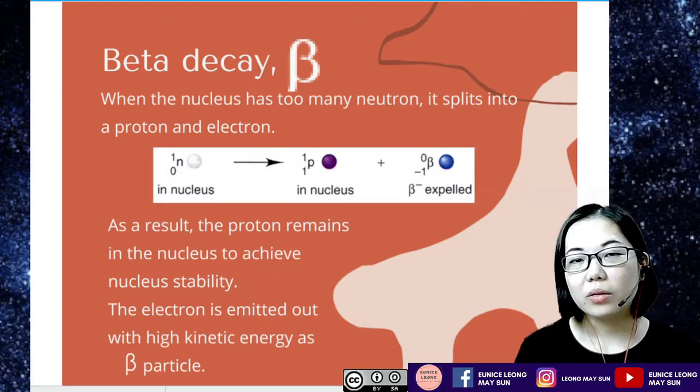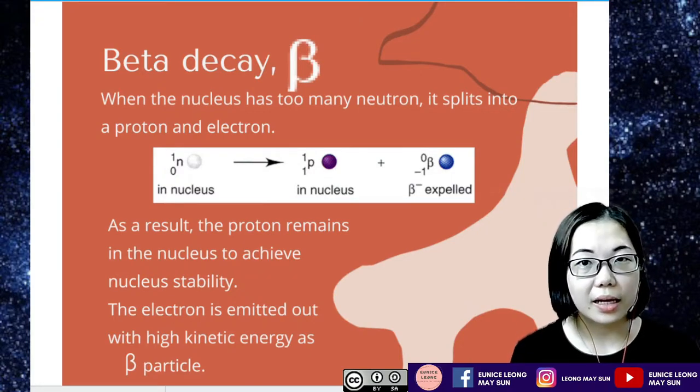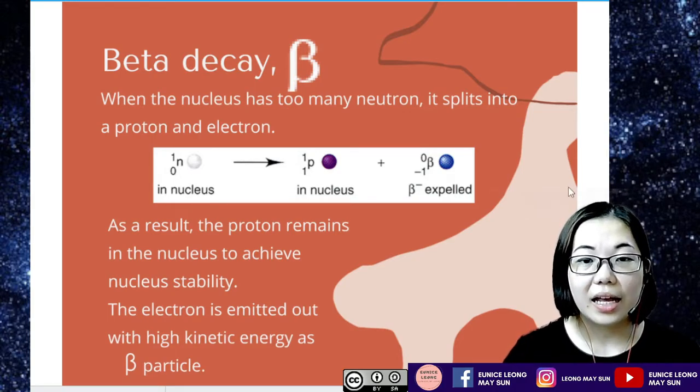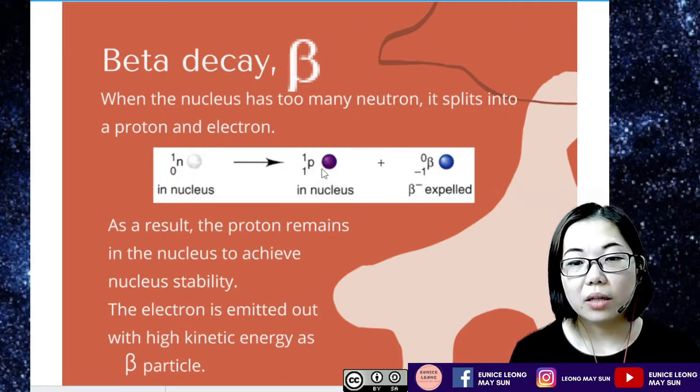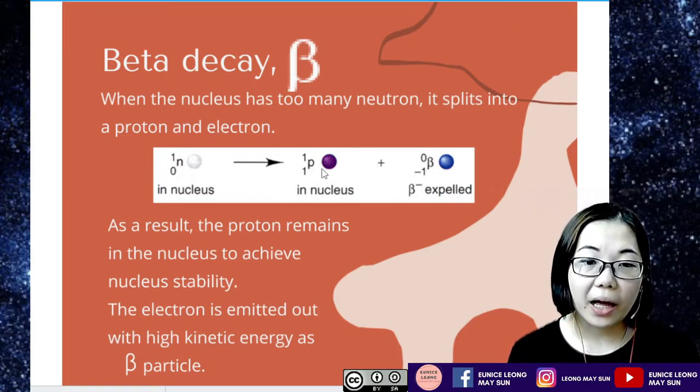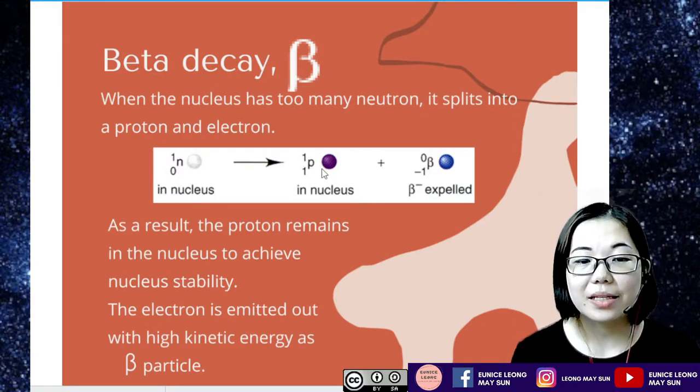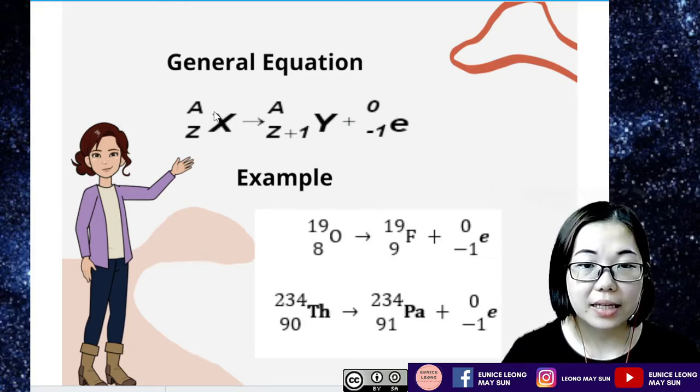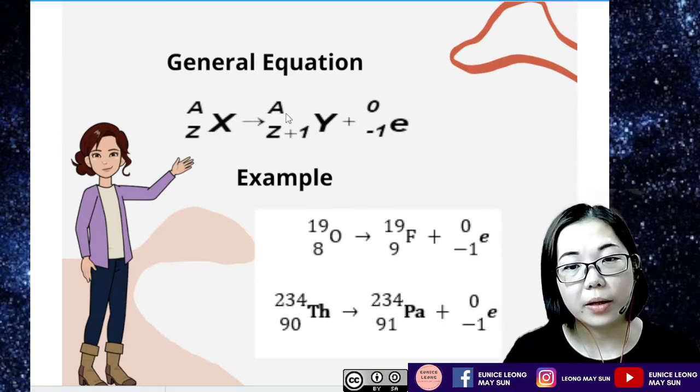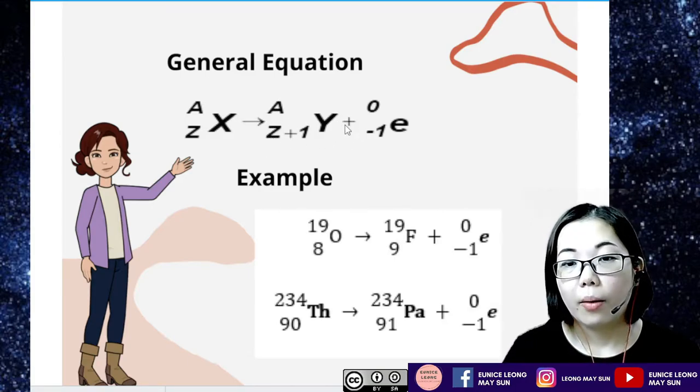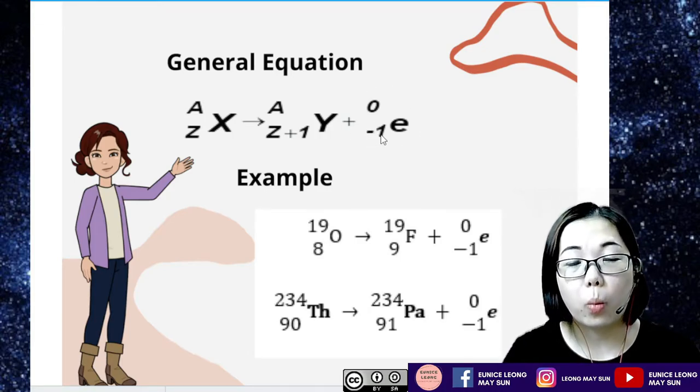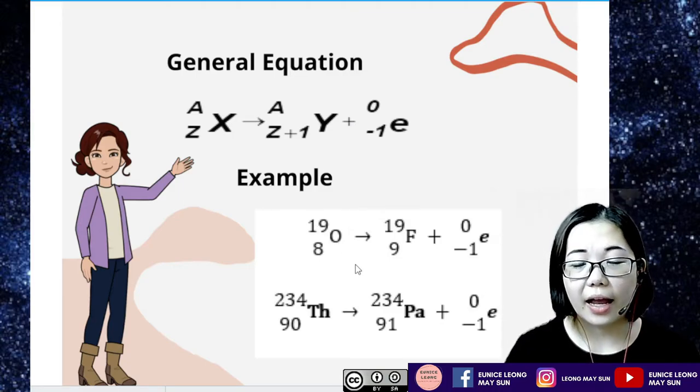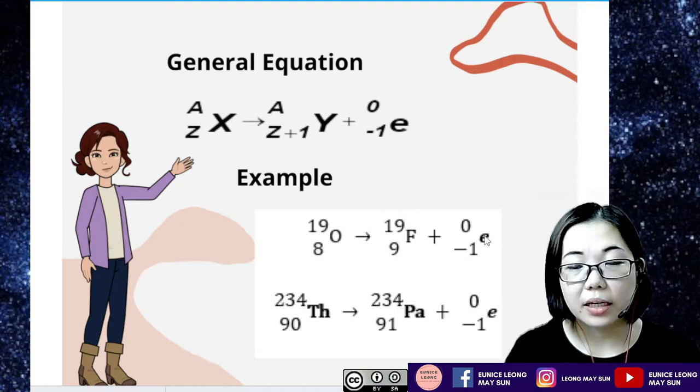Next is beta decay. Now when the nucleus has too many neutrons, a nucleus has proton and neutrons, so when there's too many neutrons, it becomes unstable. So the neutron will actually split into a proton and an electron as seen over here. So as a result, the proton will remain in the nucleus to achieve nucleus stability, but electrons being negatively charged, it will actually be emitted out as a high kinetic energy beta particle. So the general equation for beta particle is, as you can see here, x as the element, Az, and after the decay, it will become the daughter nucleus of Az plus one. Why plus one? Because electron is being emitted out. Electron has a negative one charge, so the proton number needs to be added by one.